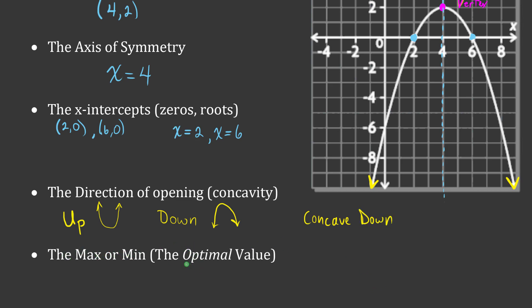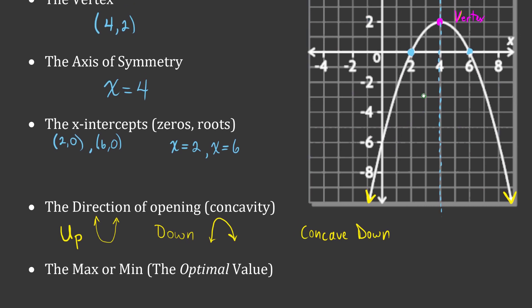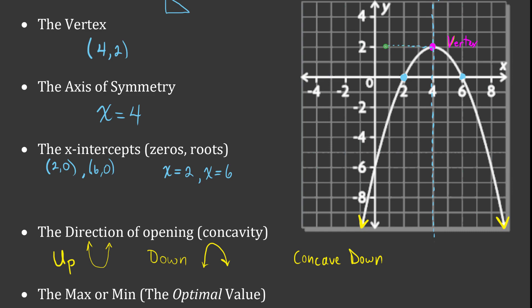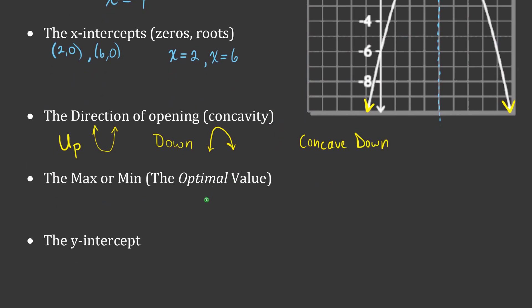Next is the maximum or minimum value, also known as the optimal value. The word optimal means best — either best because we want a high value or a low value, like minimizing costs or maximizing profit. That maximum or minimum point can always be found at the vertex — it's the highest or lowest point the parabola will ever reach. Because this parabola is concave down, it has a maximum optimal value right at the vertex. This one in particular has a maximum of two, so y equals 2. If it were opening upward, that would be a minimum value.